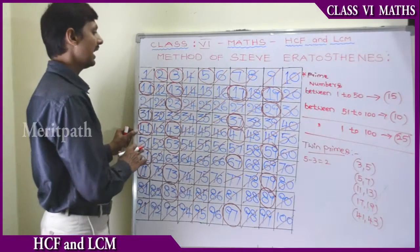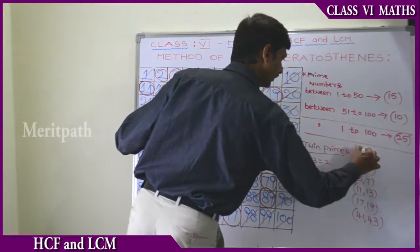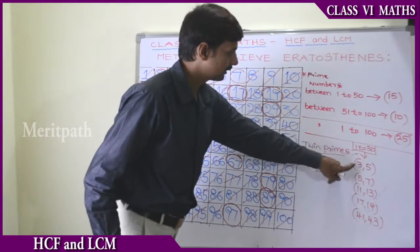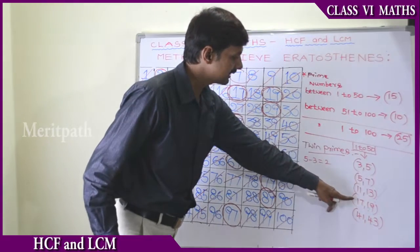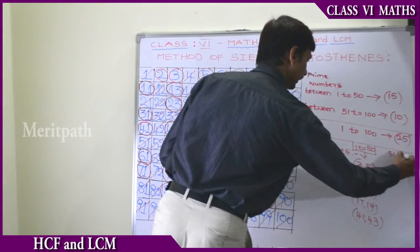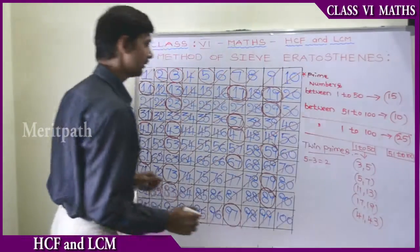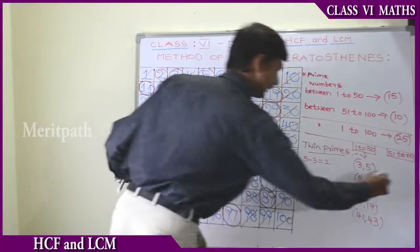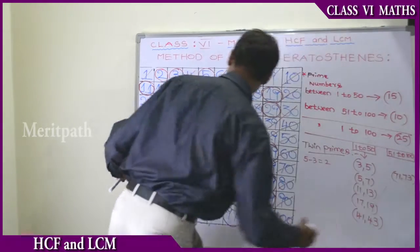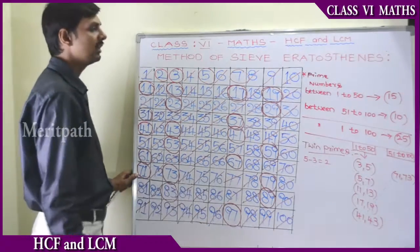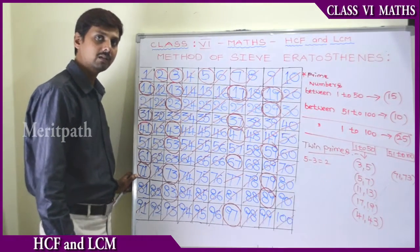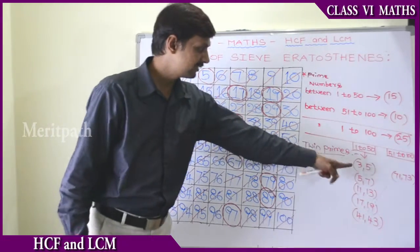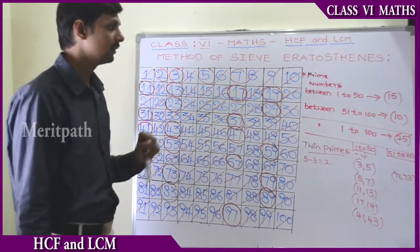And then we come to 41 and 43 — 41 and 43 are twin primes. Between 1 to 50 there are 5 twin primes: 3 and 5, 5 and 7, 11 and 13, 17 and 19, and 41 and 43. Between 51 to 100, we have 71 and 73 — 71 and 73 are twin primes. Between 51 to 100 there is only 1 twin prime pair. So totally between 1 to 100 there are 6 twin prime pairs.